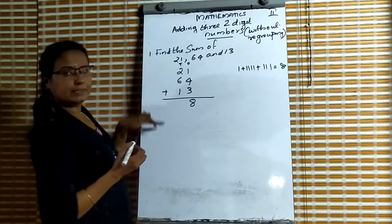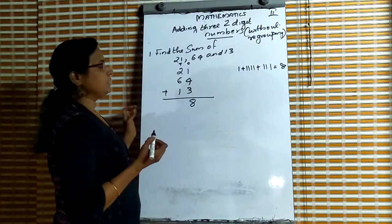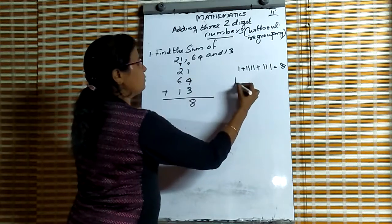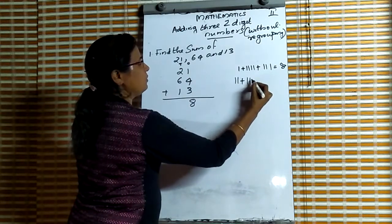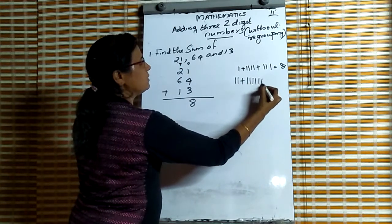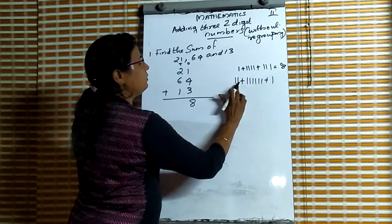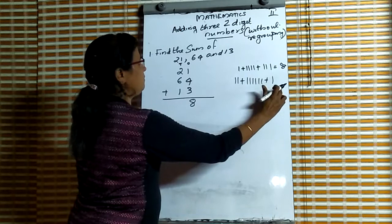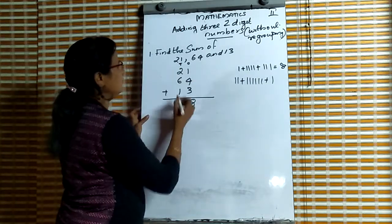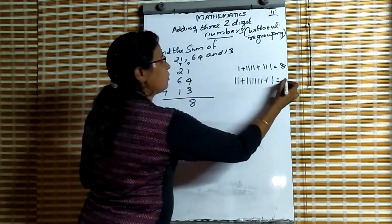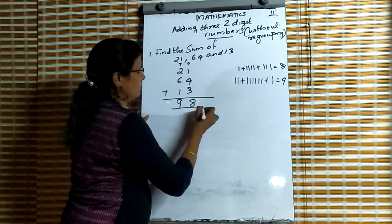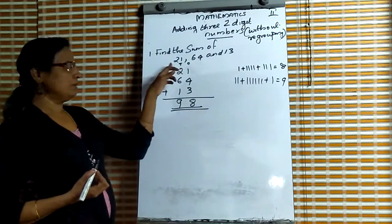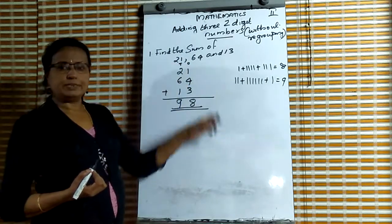1 plus 4 plus 3 equals 8. Then we add the digits in the tens place. Which are the digits in the tens place? 2 plus 6 plus 1. 2 plus 6 plus 1 equals 9. So our answer is 98. Find the sum of these three two-digit numbers.